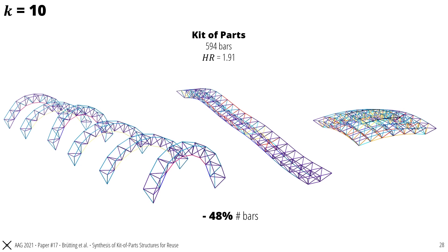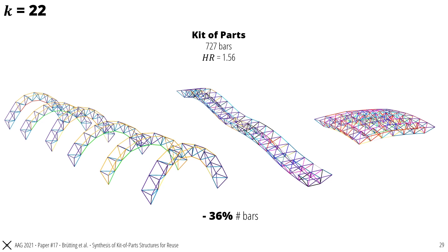In the next case, we allow more groups of bar lengths. Here 10. We can see that the structures resemble better the input geometry, with the trade-off of a lower homogenization rate. In other words, in this case, less bars can be reused among the three structures than before. A further increase to 22 length groups preserves even better the initial geometry, but again reduces further the homogenization rate.